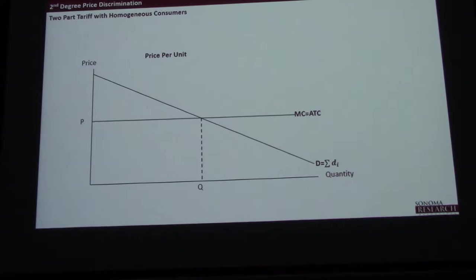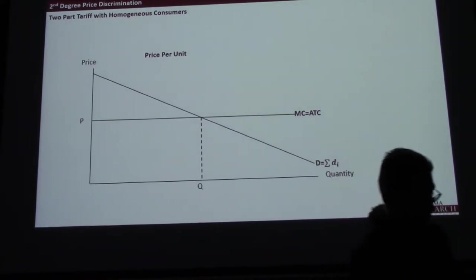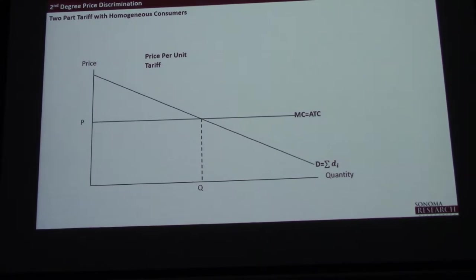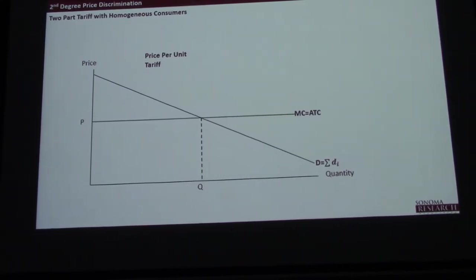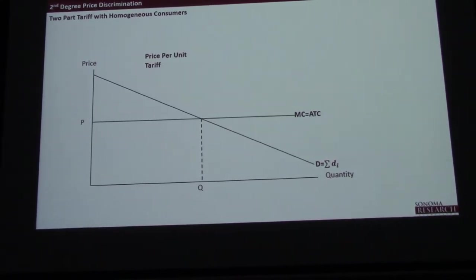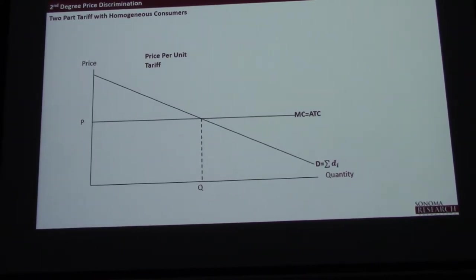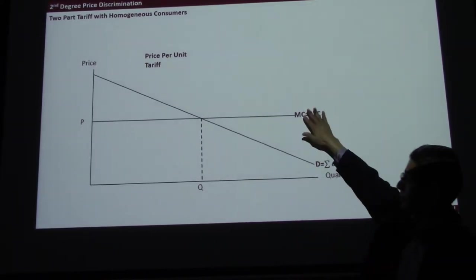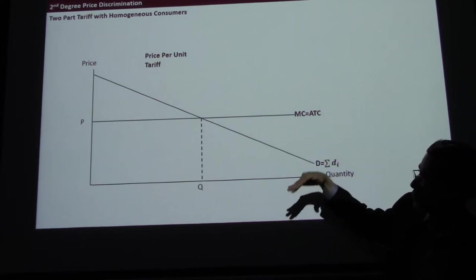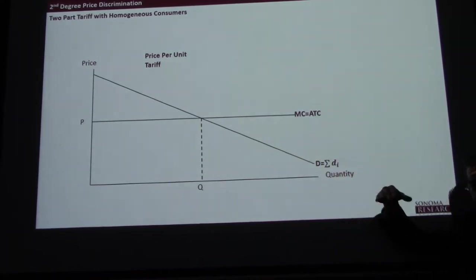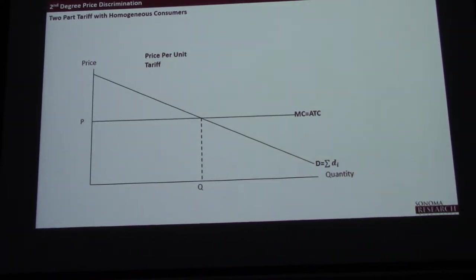So how do I make my money? That's the second part of a two-part tariff — we call it a tariff. Essentially I say: I'm going to let you buy this product basically at my cost, at this really low price. In fact if I lower price anymore, I'm going to lose money. But I'm going to let you buy this thing at cost — but you're going to have to pay me for the right to do that.